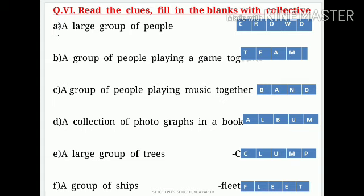Second one: a group of people playing a game together — the answer is team. Four letters: T-E-A-M. Third one: a group of people playing music together. Don't confuse between B and C — read properly. B is a group of people playing a game; C is a group of people playing music together. So for the group playing music, the collective noun is band. Four letters: B-A-N-D.